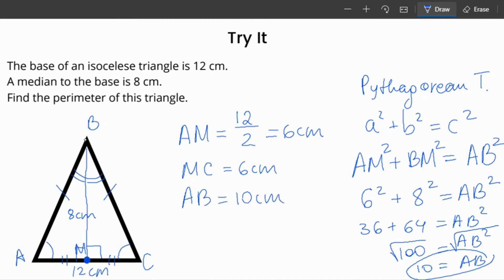Since AB equals BC, BC also equals 10 centimeters. So the perimeter is AC plus AB plus BC. And that is 12 plus 10 plus 10, which equals 32 centimeters.